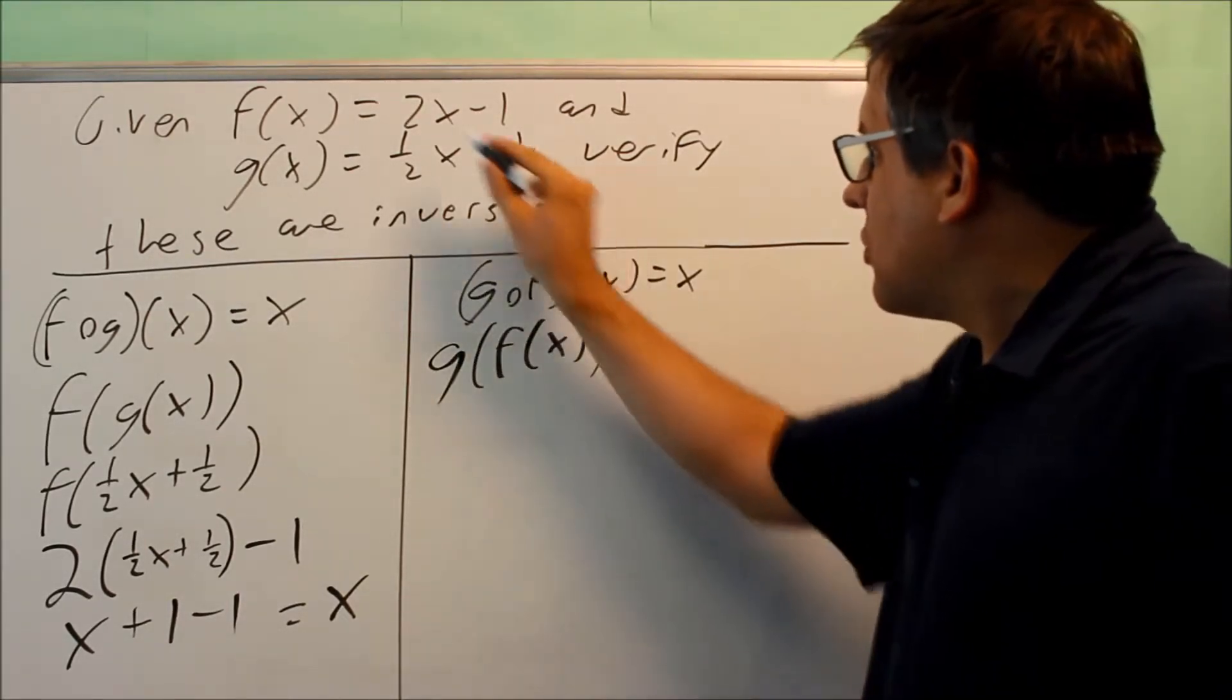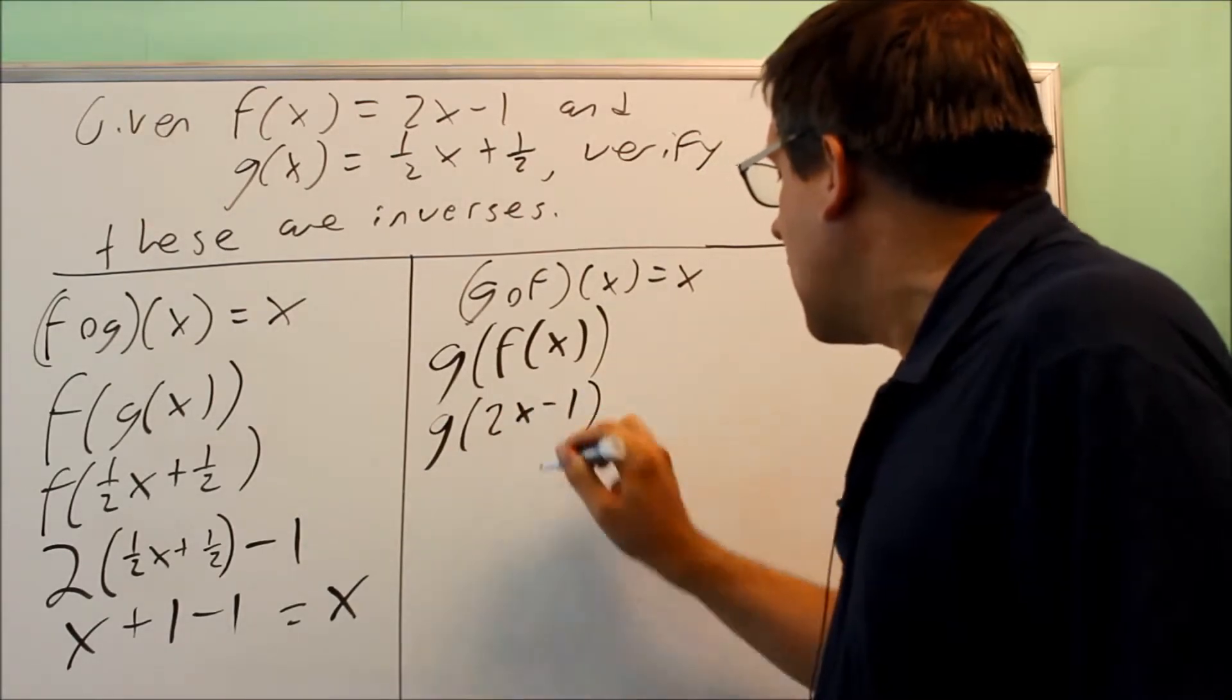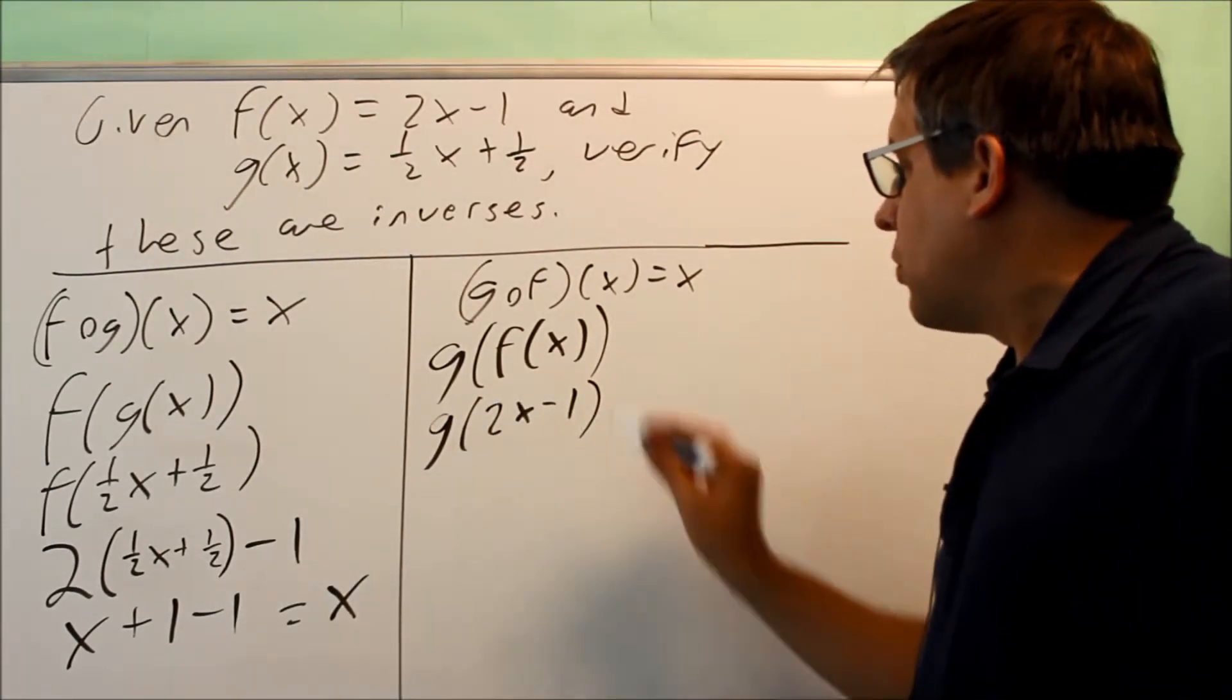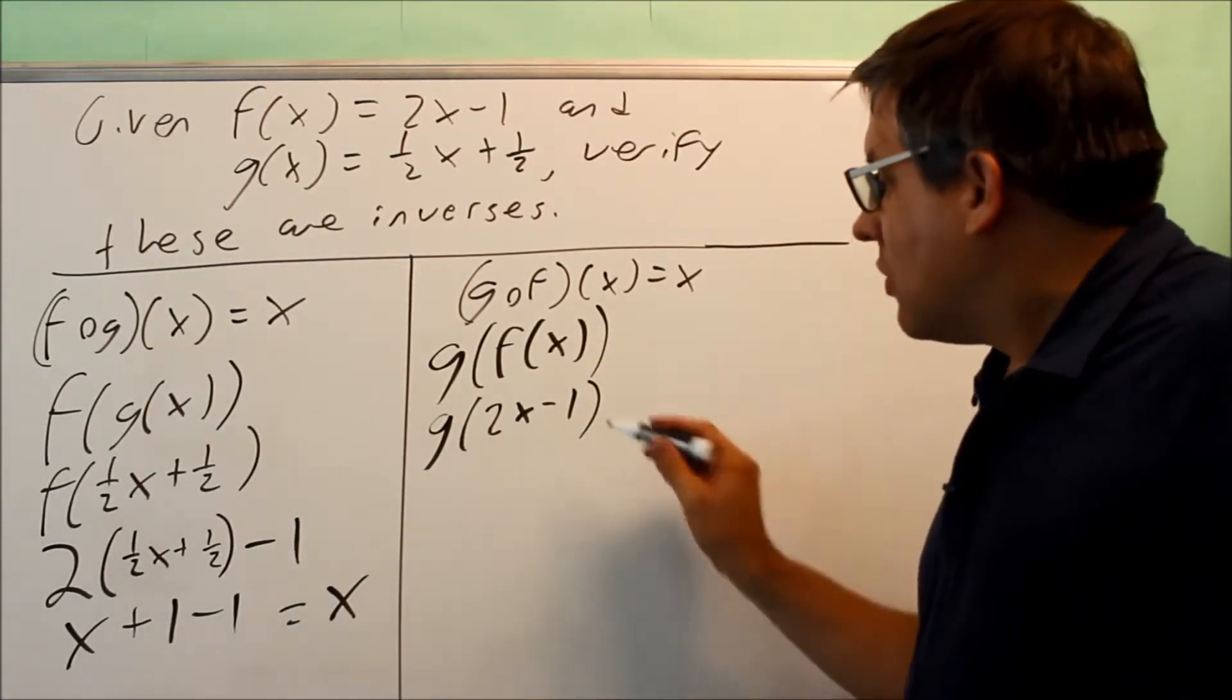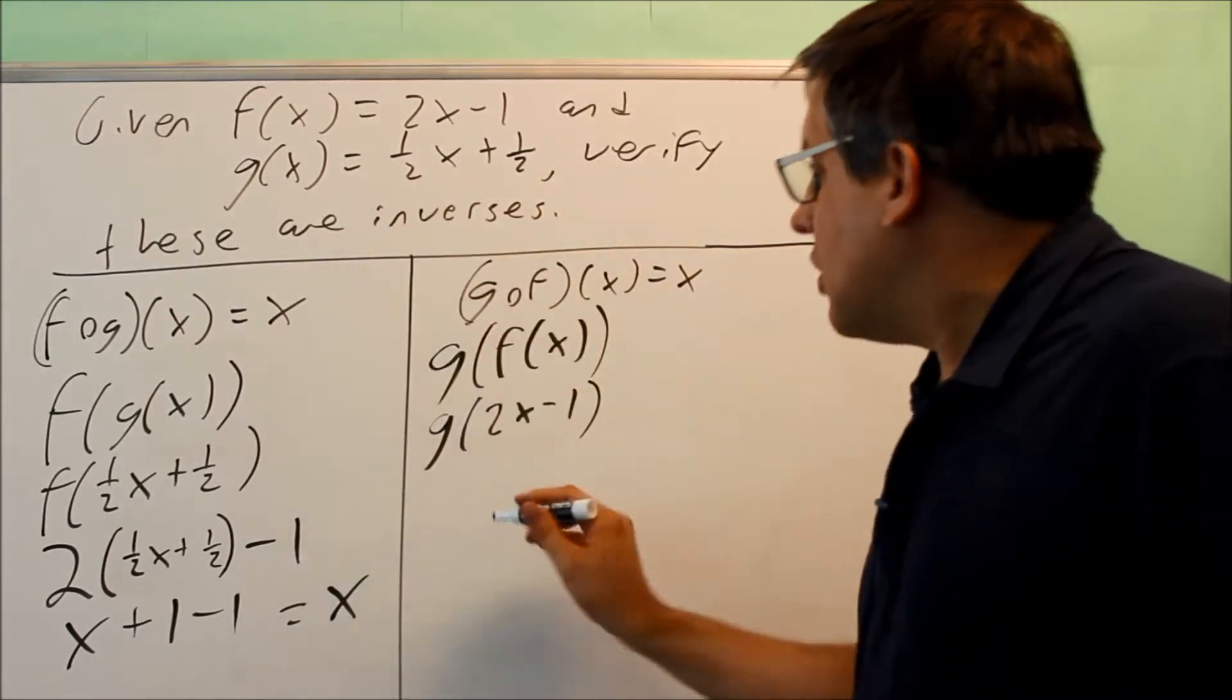f of x is our 2x minus one. I'm going to put that inside here in place of the original f of x. This is saying now that I've got to put 2x minus one into the g. Okay, here's g.